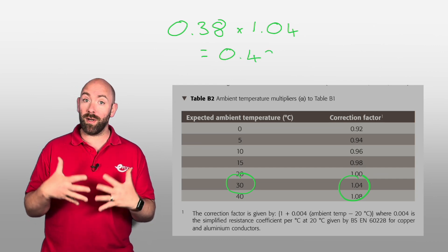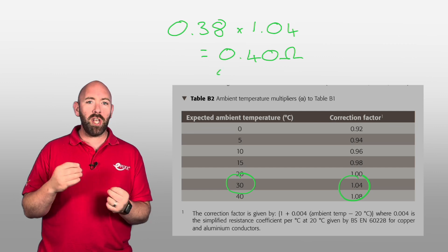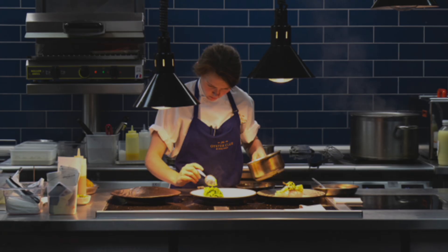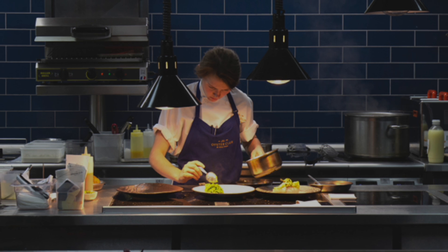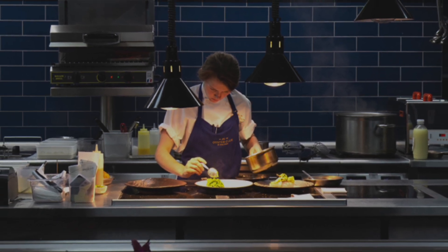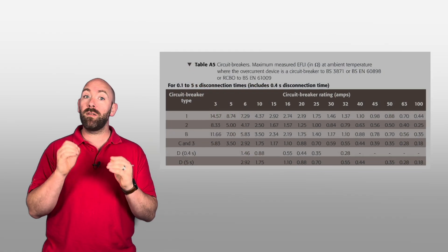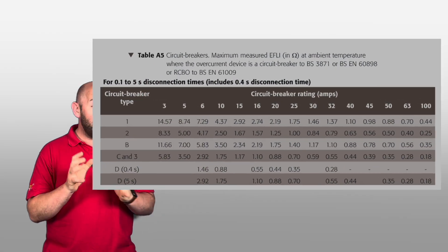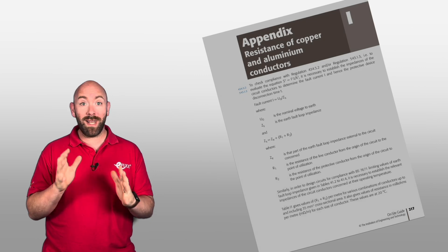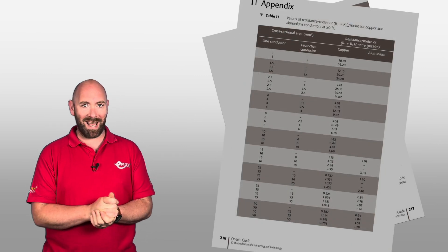The higher temperature increases the resistance. In reality this could mean that a circuit installed in an area where the ambient temperature exceeds 20 degrees — when combined with another test (look out for a future video on that) — may exceed the maximum permitted values for our circuits. These values are also given in the on-site guide in Appendix I if you don't have your Guidance Note to hand.